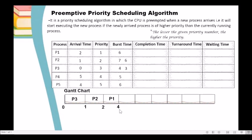At time 4, P5 arrives in the ready queue. We compare the priority of P5 and P1. The priority of P1 is 1, the priority of P5 is 5 — P1 has higher priority than P5, so we continue executing P1. P1 will execute until the next arrival time, which is 5. So P1 will execute until time 5.